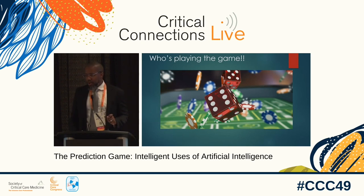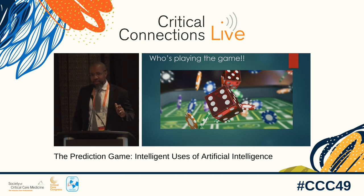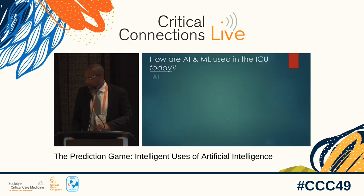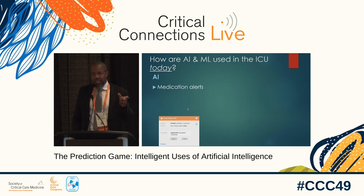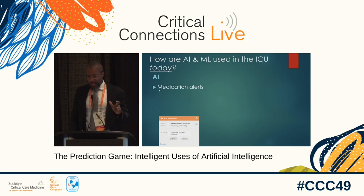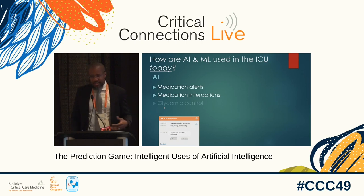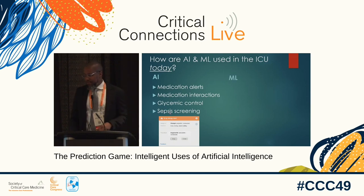I think the thing I really want to focus on is who's playing the game right now — because that will inform how we implement and deploy this in the future. Many of our current alerts in electronic medical records can be considered artificial intelligence on a very basic level. Things like medication alerts, interactions that we get pop-ups for, glycemic control, and some of the sepsis screening tools built into our electronic medical records can all be considered some form of artificial intelligence.